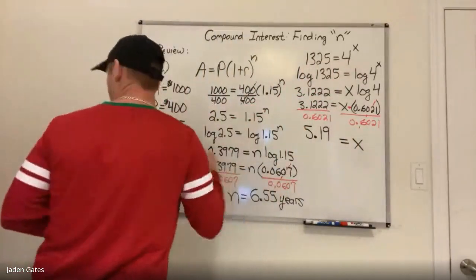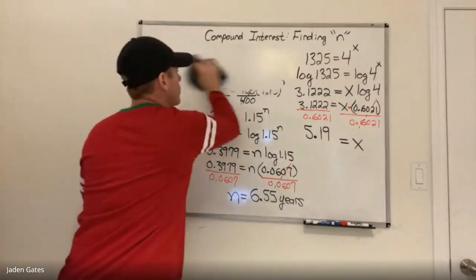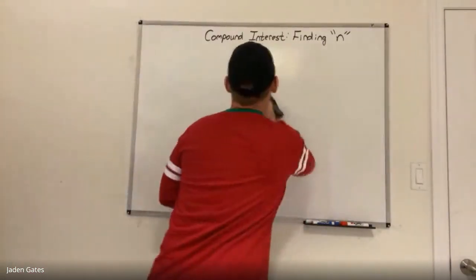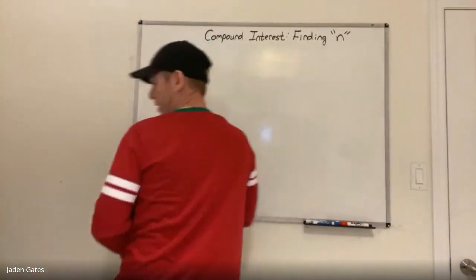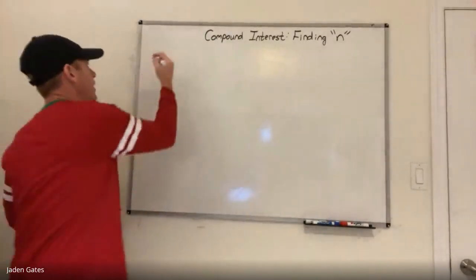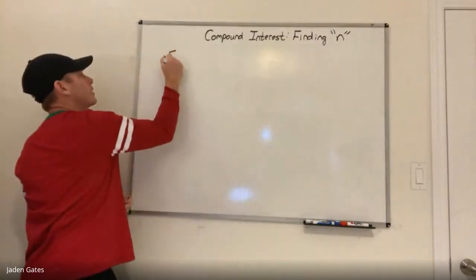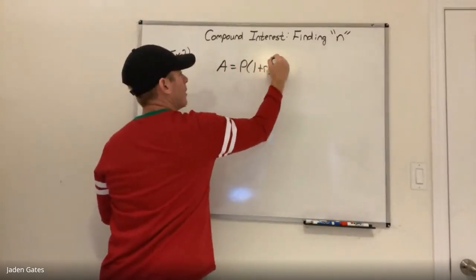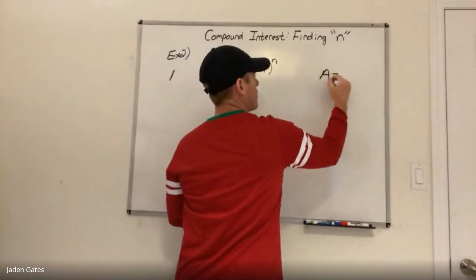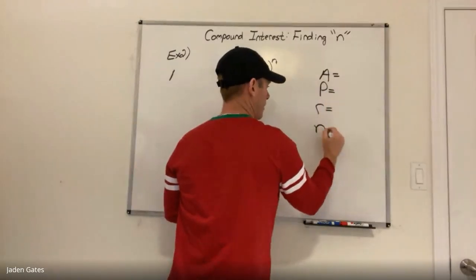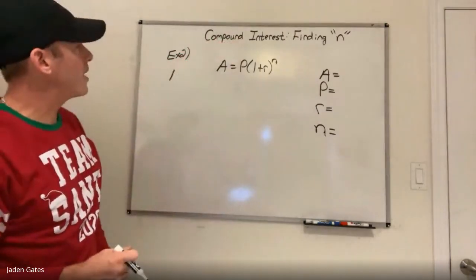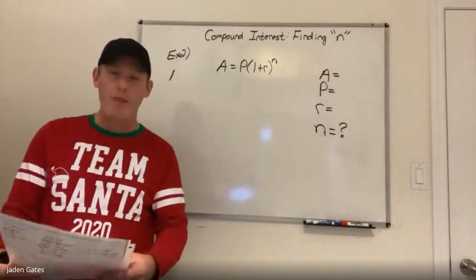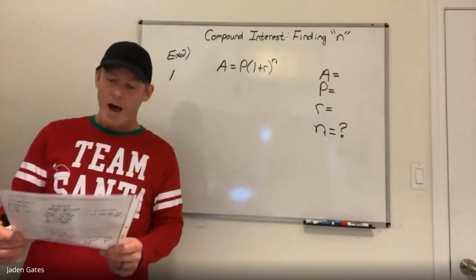That's logs applied in a real-life money context rather than just solving an abstract equation. Now for Example 2, we're looking at compound interest again — write down the formula and four variables — with the title 'Compound Interest: Finding n,' so let's put a question mark for n already.